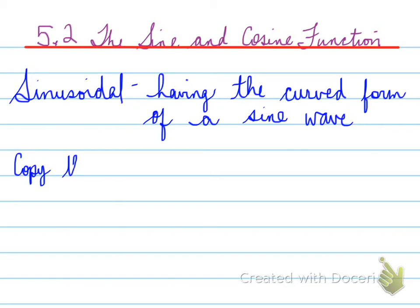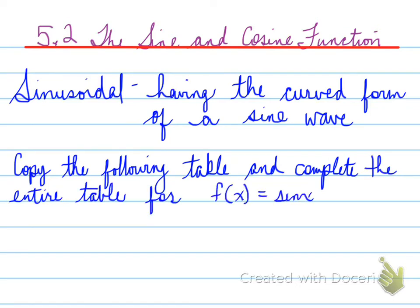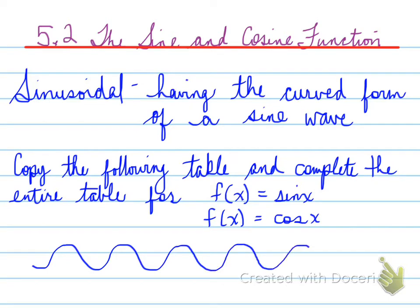What's important is that I want you to copy the following table and complete the entire table for f(x) = sine x and f(x) = cosine x. Eventually you're going to see a wave that goes up and down repeatedly. This wave continues on forever in both directions, and we're going to look at those types of functions, but you have to be able to draw them first.